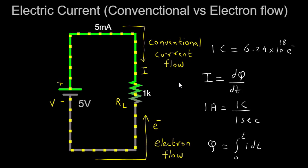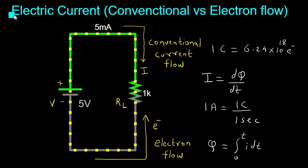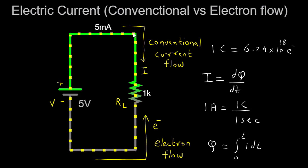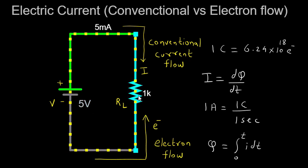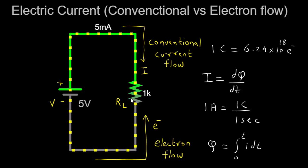Electric current refers to the flow of electric charge through a conductor. In simpler terms, it is the movement of charged particles from one point to another. In our demonstration, we have set up a basic circuit consisting of a 5-volt battery connected to a 1-kilohm resistor. This setup will help us visualize and understand the flow of current.